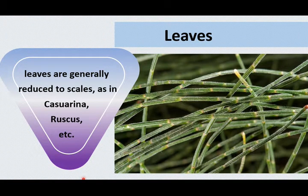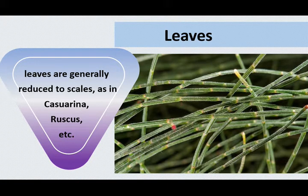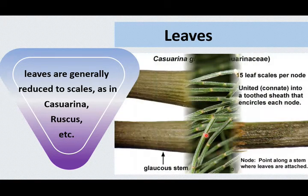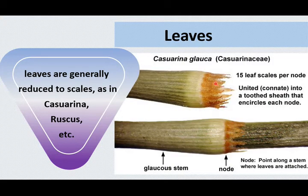Now we shall see the modifications in the leaf. Leaves are generally reduced to scales, as in Casuarina and Ruscus. The green photosynthetic structures are the stem; at the nodal regions you can see fine brownish scale-like leaves. This reduction helps the plant reduce its rate of transpiration.